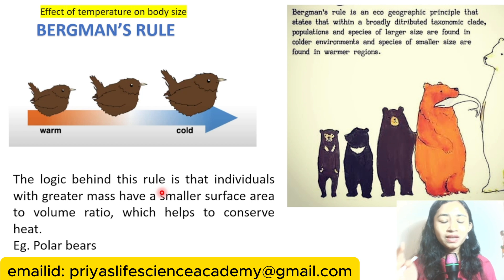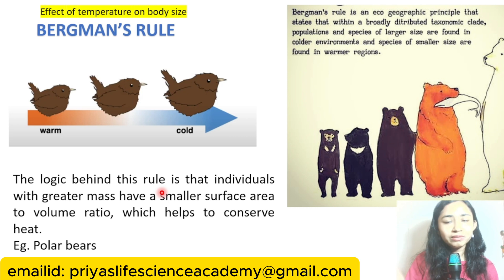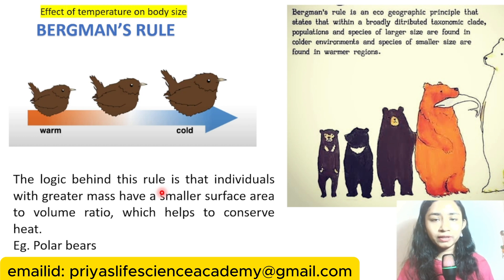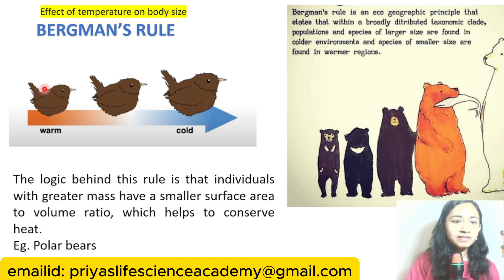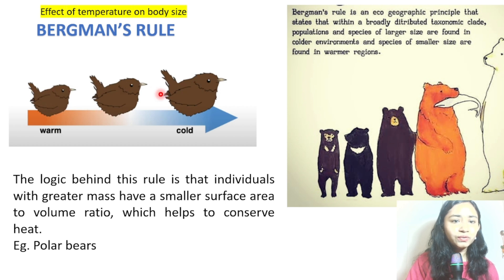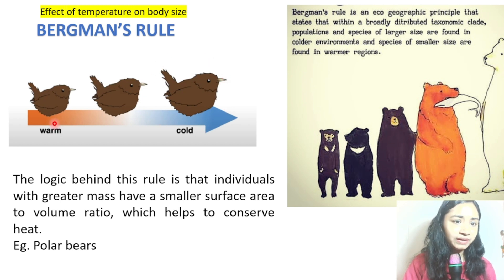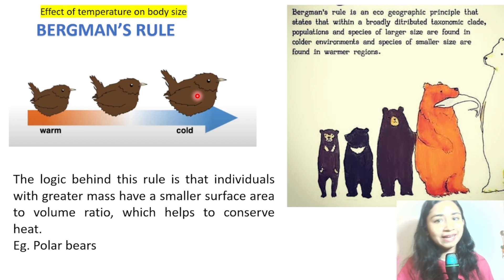Temperature has a role on the size of the animal's body. According to that, Bergman has given us a rule known as Bergman's Rule, which gives us the relationship between temperature and body size. Here you can see that the same bird species, when exposed to different temperatures, differ in body size — small in warm temperature and large in cold temperature, despite being the same species.